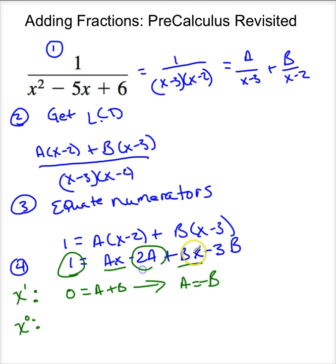And then I'm going to equate my x to the 0 terms. So this is the constant terms. So 1 is minus 2A minus 3B.